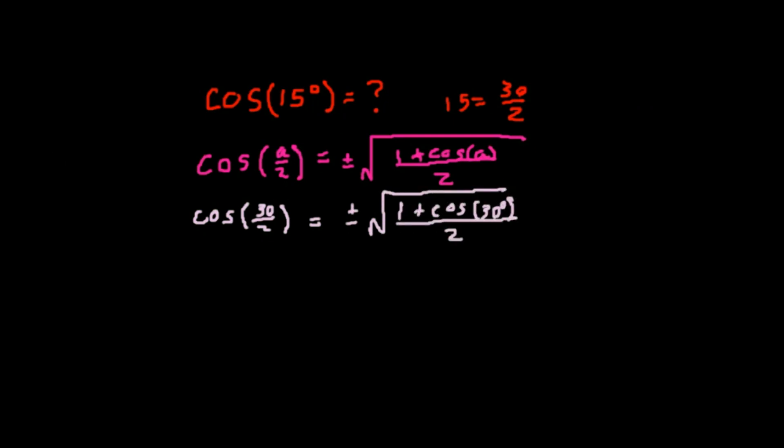We know that the cosine of 30 degrees is root 3 over 2. Then once it's all simplified, that gives us the square root of 0.5 plus 0.25 root 3.